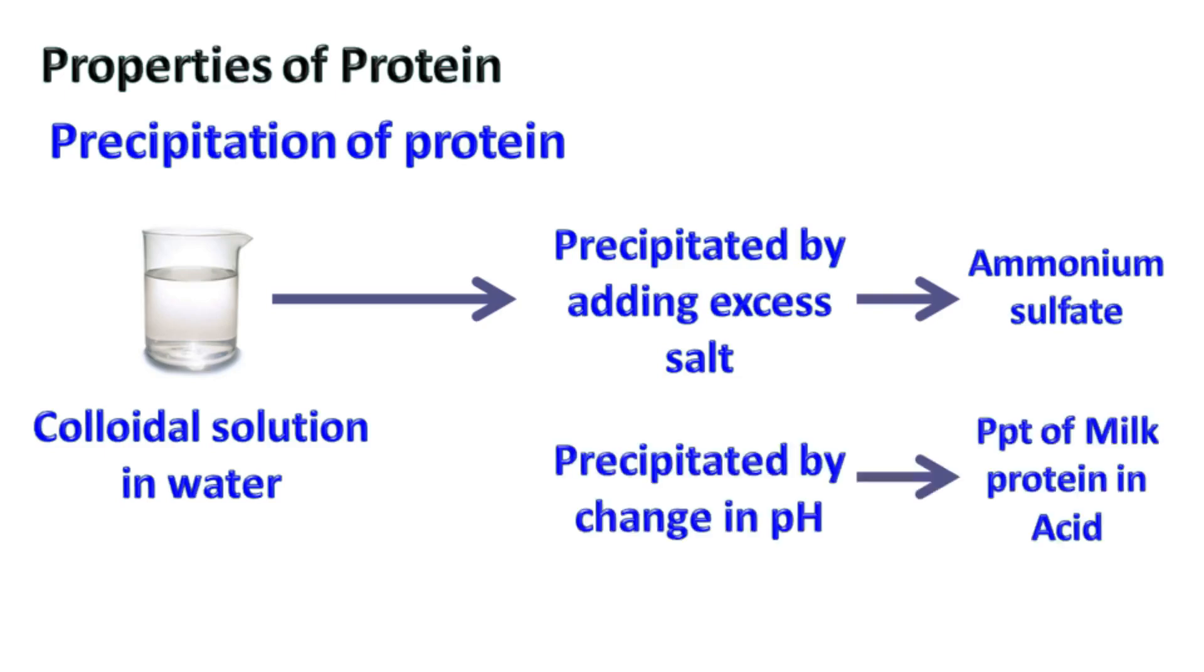Proteins can also be precipitated by change in pH. For example, the proteins present in the milk can be precipitated by addition of an acid.